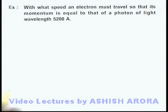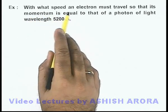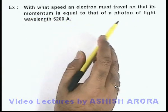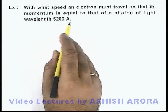In this example we are required to find with what speed an electron must travel, so that its momentum is equal to that of a photon of light wavelength 5200 angstrom.